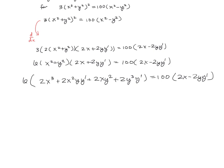Next up, we'll just multiply this all out. So we're going to have 12x³ plus 12x²y y prime plus 12xy² plus 12y³ y prime equals 200x minus 200y y prime.